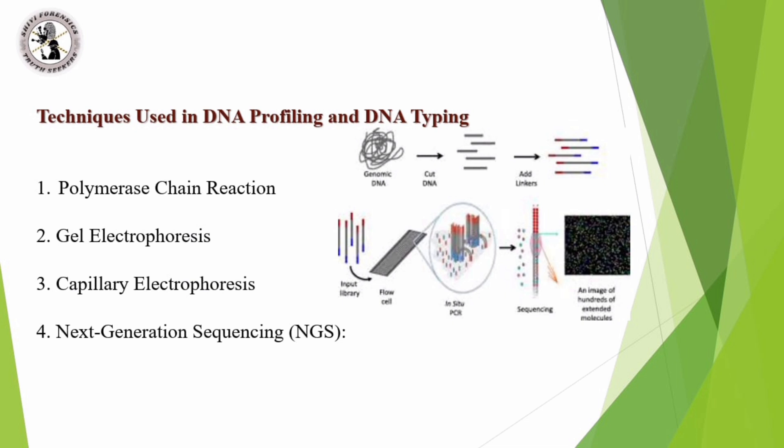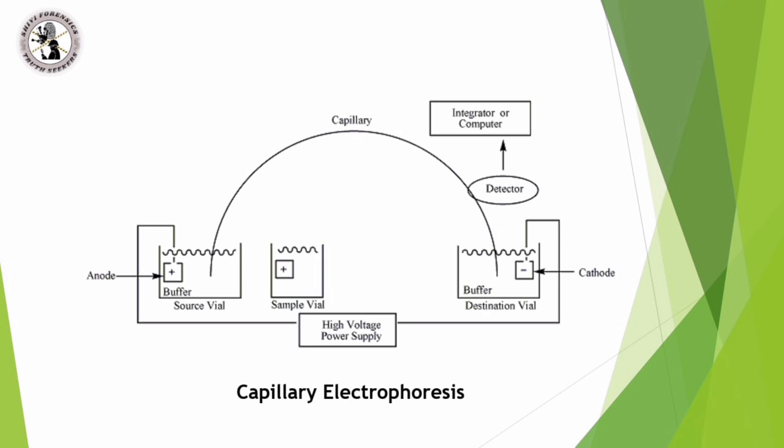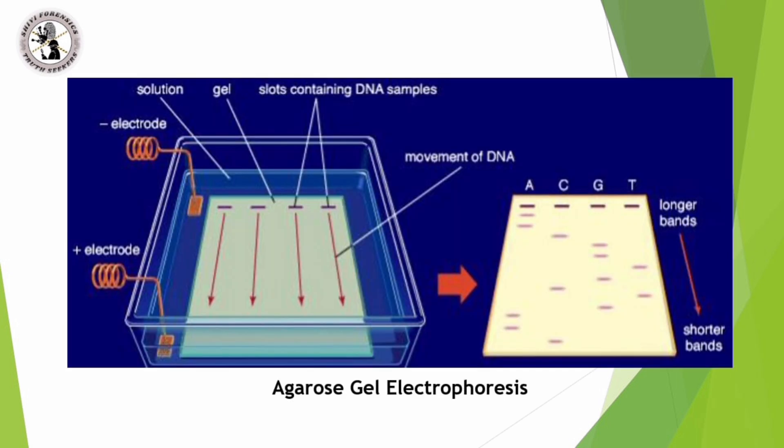There are schematic representations of the above-mentioned techniques. Next generation sequencing involves four steps: DNA extraction, library preparation, sequencing, and analysis. Polymerase chain reaction involves several steps: denaturation, annealing, and elongation. The next slide explains capillary electrophoresis, which involves both positively and negatively charged separation. Finally, agarose gel electrophoresis is also illustrated.